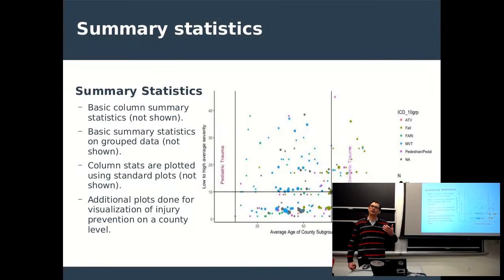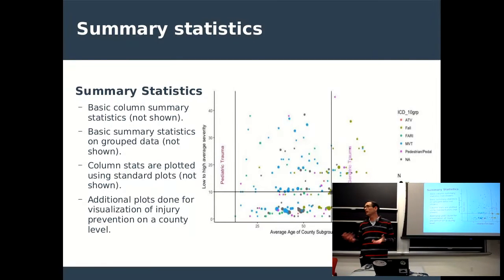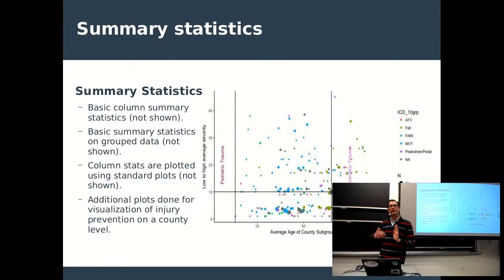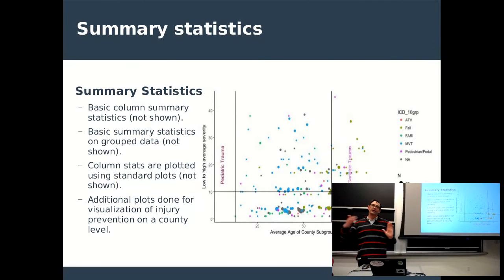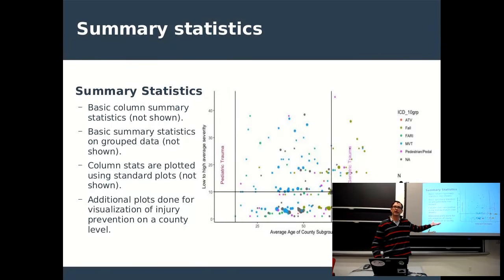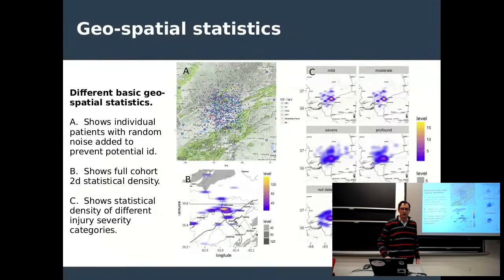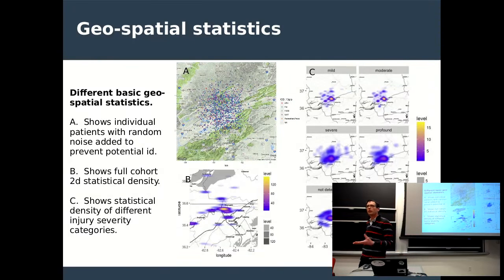Before, doctors couldn't see where their patient population was literally coming from. Taking this data, you can overlay it on previous years and determine if there are changes. We're working on a differential analysis to see if there's been an increase or decrease among specific ICD-10 groups across different counties or regions. People need to see where patients are coming from in order to help compare.